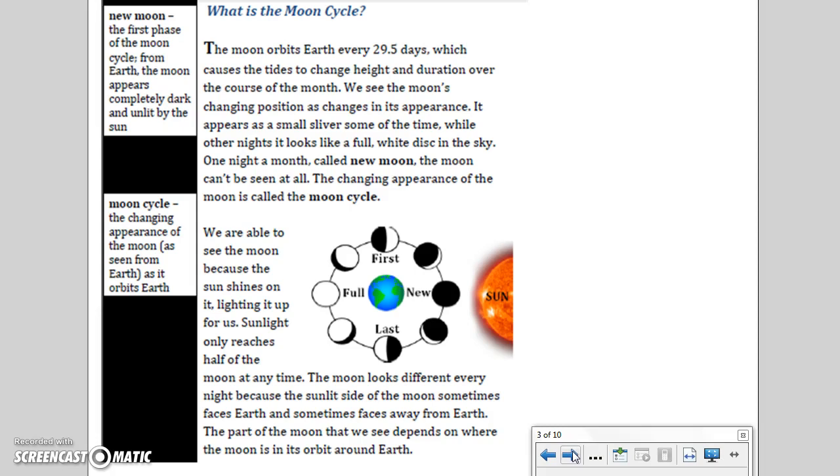We are able to see the moon because the sun shines on it, lighting it up for us. Sunlight only reaches half of the moon at any time. The moon looks different every night because the sunlit side of the moon sometimes faces Earth and sometimes faces away from Earth. The part of the moon that we see depends on where the moon is in its orbit around Earth.